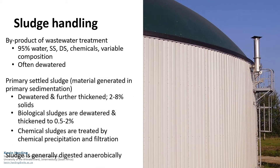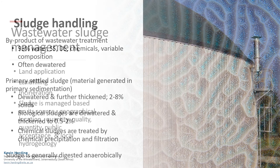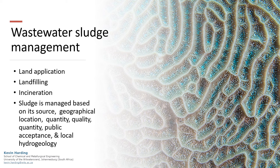Solids that result from the wastewater treatment process are often dewatered and thickened. They can be treated by chemical precipitation and filtration, and are often digested anaerobically. Solid waste can be landfilled, incinerated, or used for other applications, depending on the geographic location of the facility, as well as other factors.